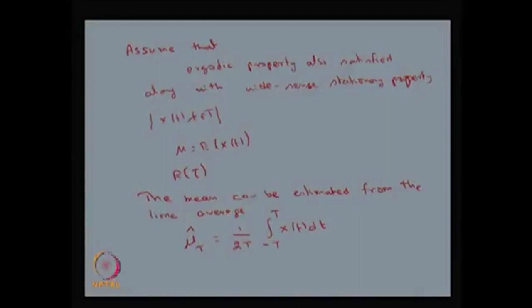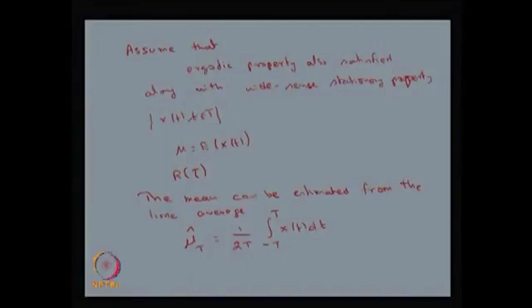Similarly, one can estimate other higher order moments also, provided the process is ergodic with respect to those moments. Here I have made the process ergodic with respect to the mean, therefore you are estimating the mean using the ergodic property. Similarly, if the given stochastic process satisfies the ergodic property with respect to higher order moments, then those measures can also be estimated in the same way. Here μ̂(t) converges in squared mean to μ as T tends to infinity — that is the conclusion we get from the ergodic property along with the wide sense stationary property.